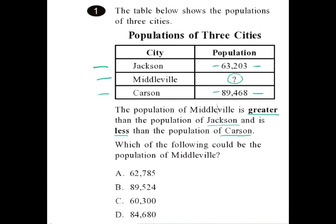Let's see which ones can be possible answers. Letter A, 62,785 — that's not in between those two numbers. 89,524 — that is also not in between those two numbers. 60,300 — that is not in between those two numbers. 84,680 — yes, that is in between those two numbers. Letter D is the correct choice.